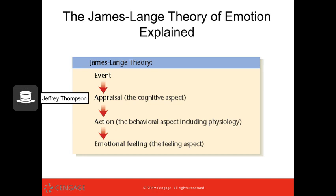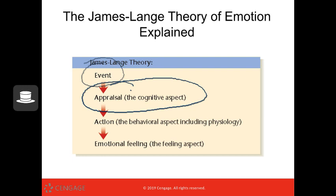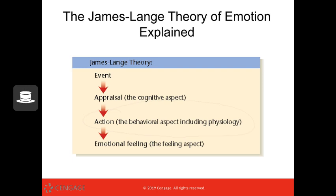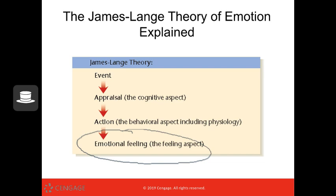Here's the James-Lange theory illustrated. There's some event — in my case, the big rap battle. My brain appraises the situation, that's the cognitive aspect. Then I have the action, me practicing my rap. And then the physiological fight-or-flight response happening in my body. And then the emotional feeling — 'oh boy, I am nervous.'